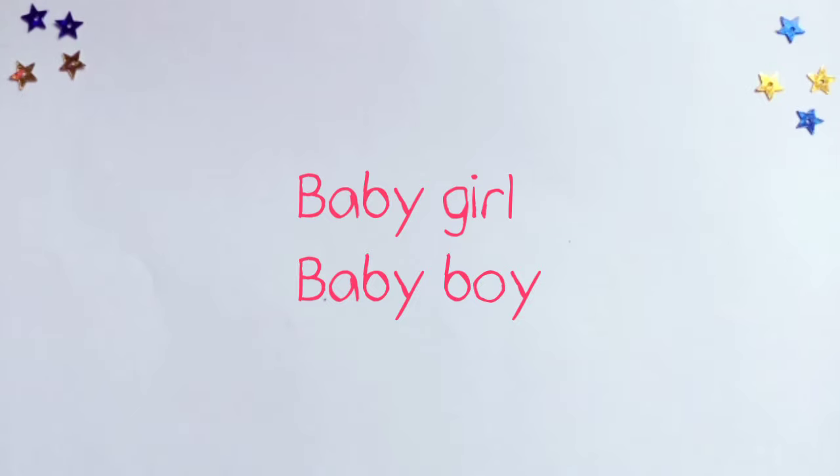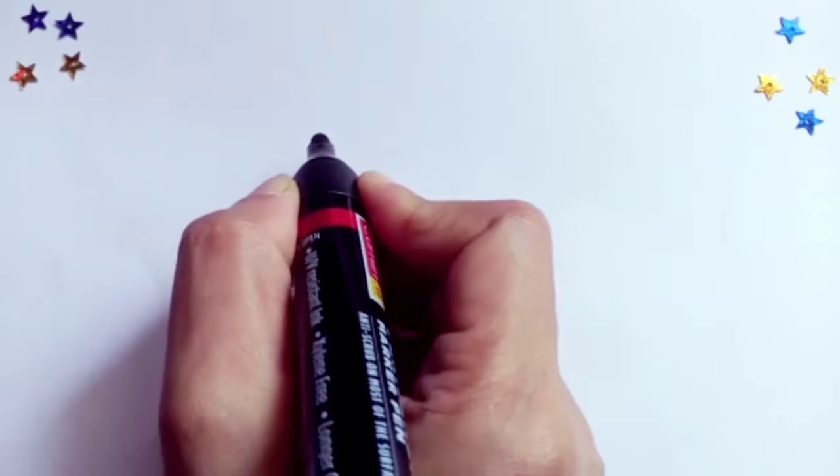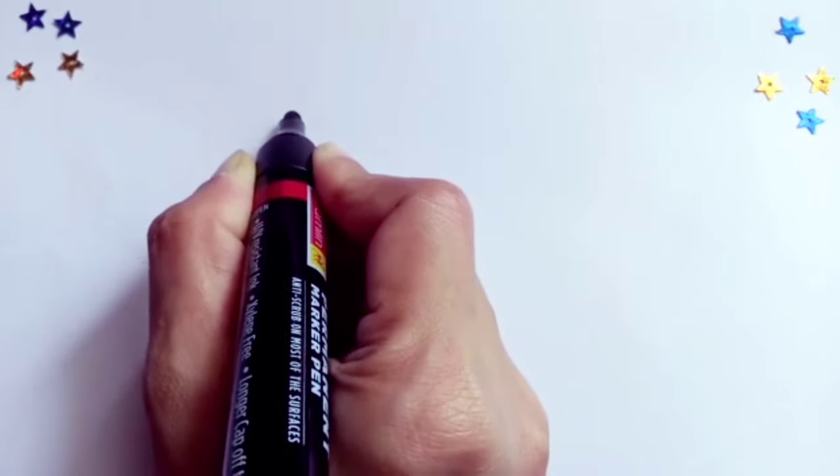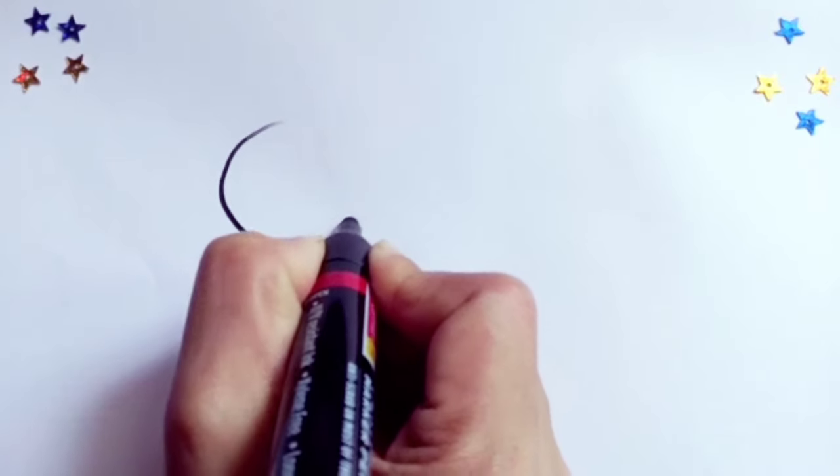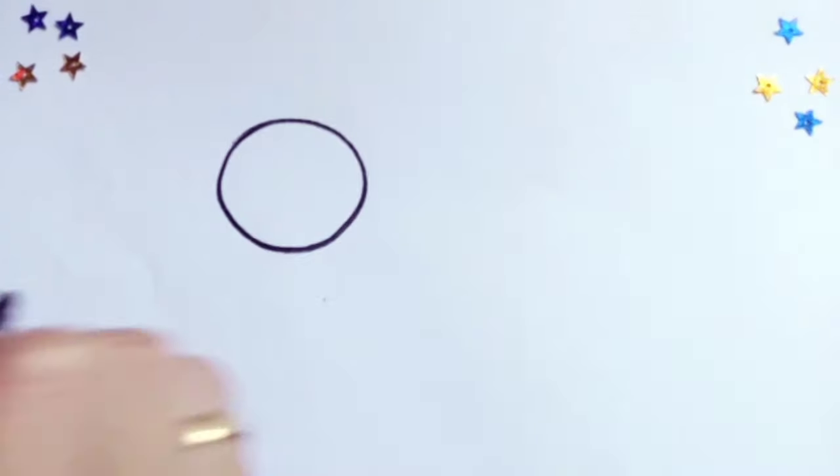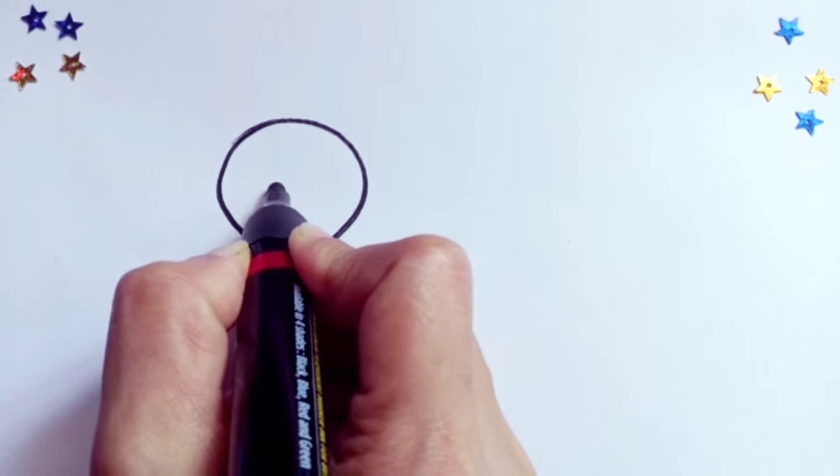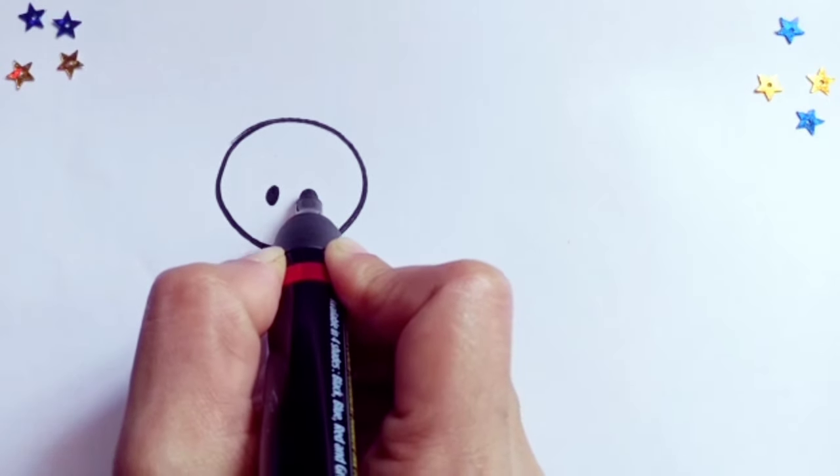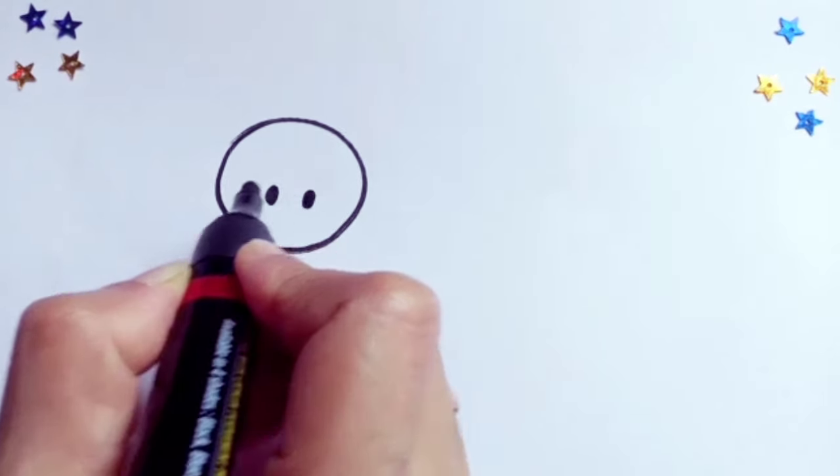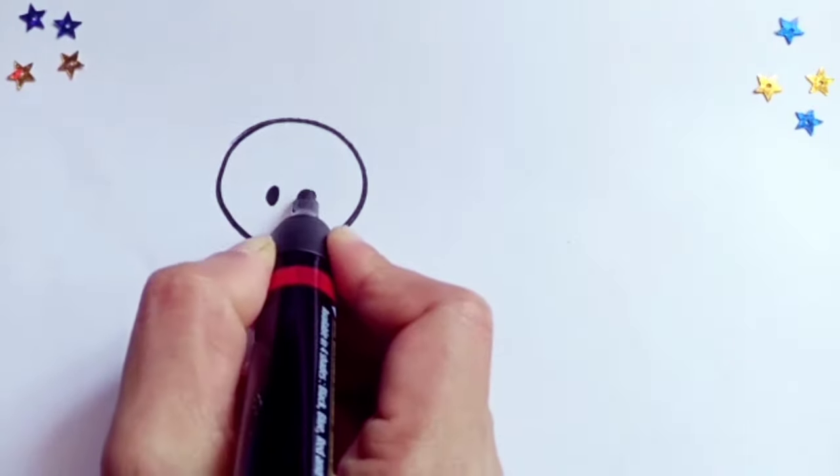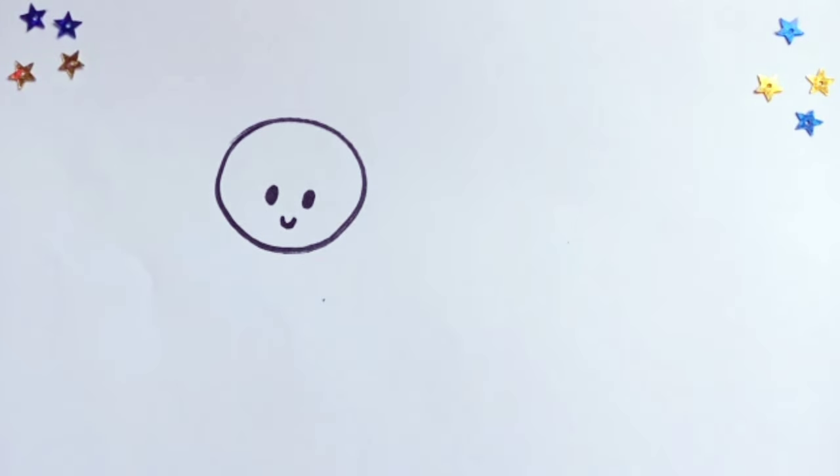Hello kids, today let's learn to draw a cute baby girl and a baby boy. So let's start by drawing the baby boy. First, draw a nice circle. Now draw two little eyes, draw them towards the bottom of the circle. Baby's lips.